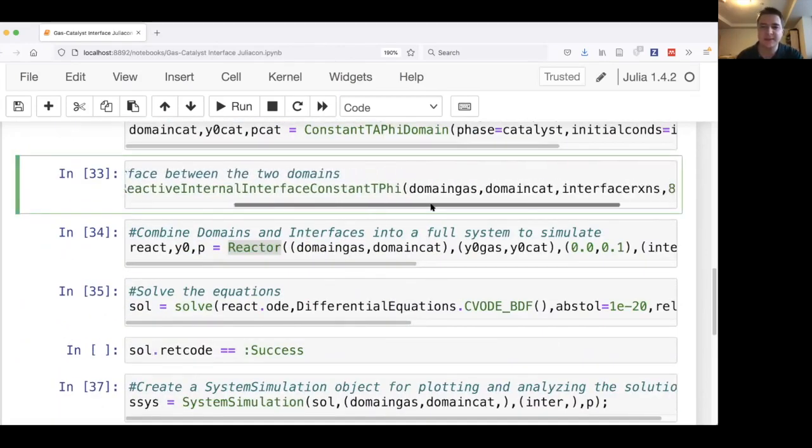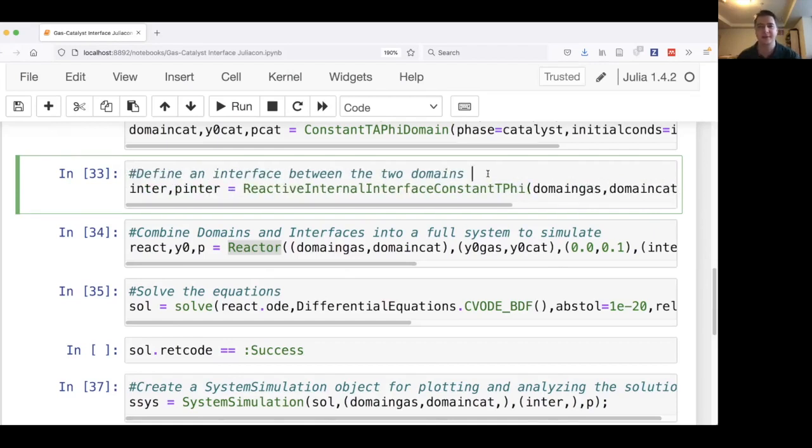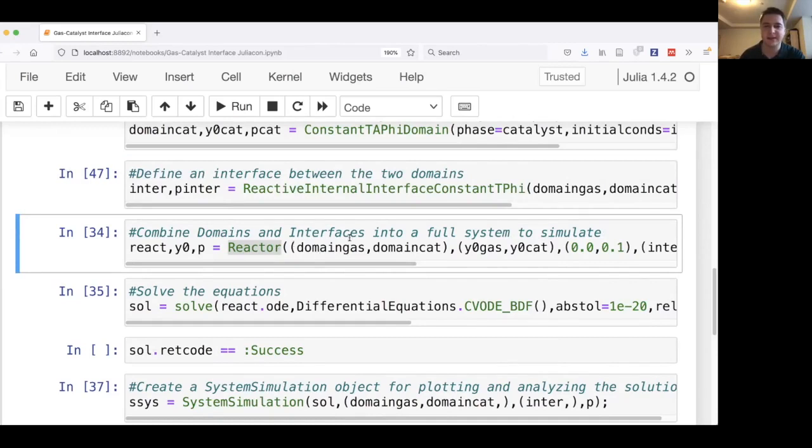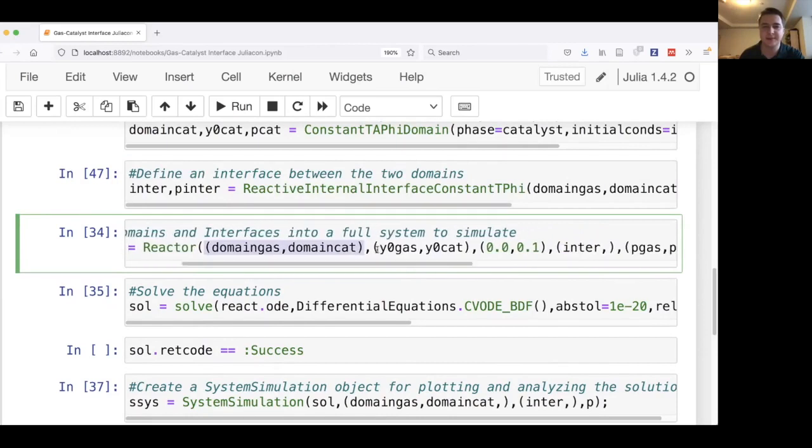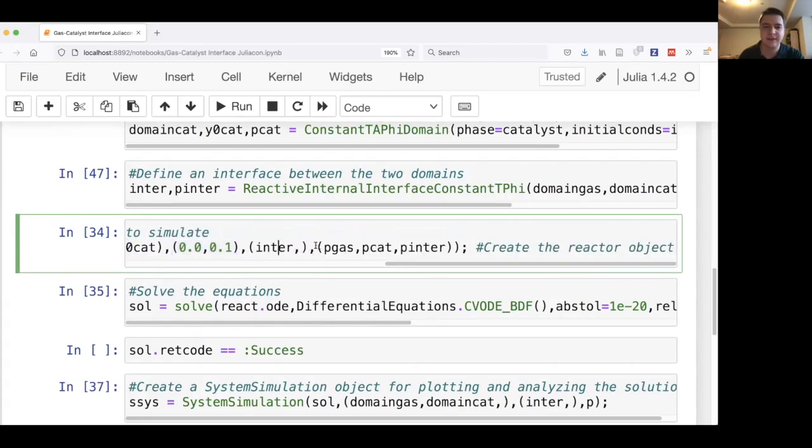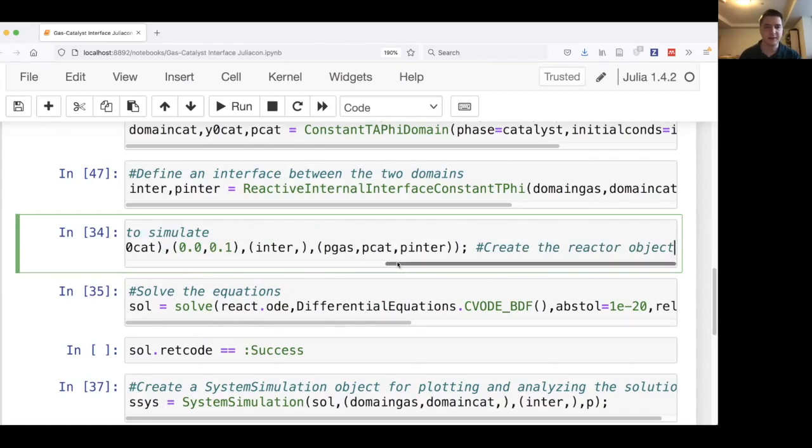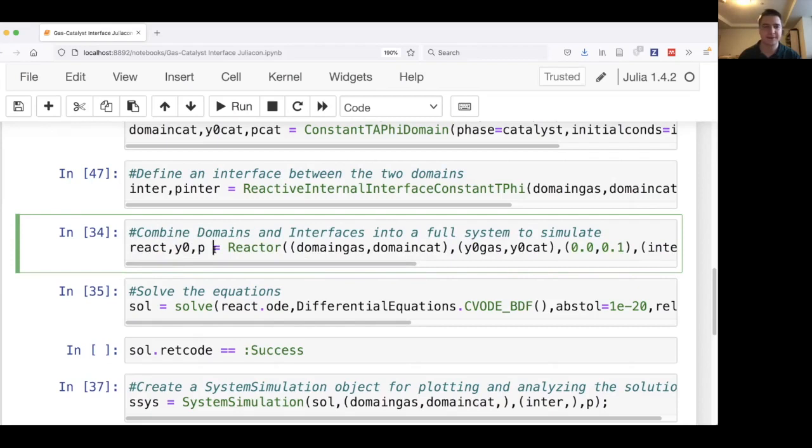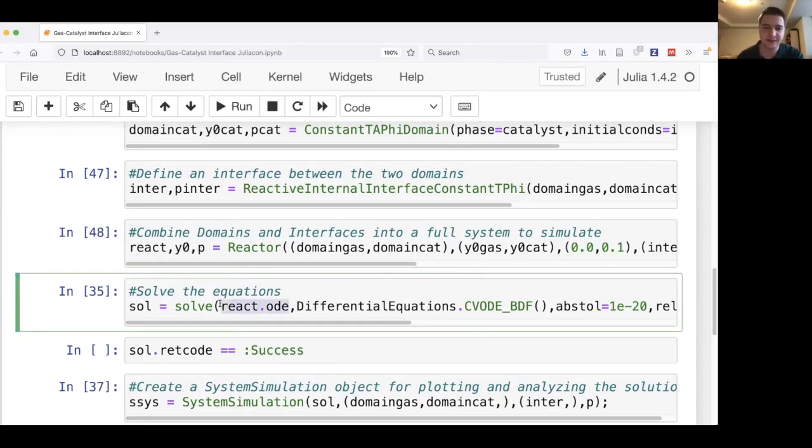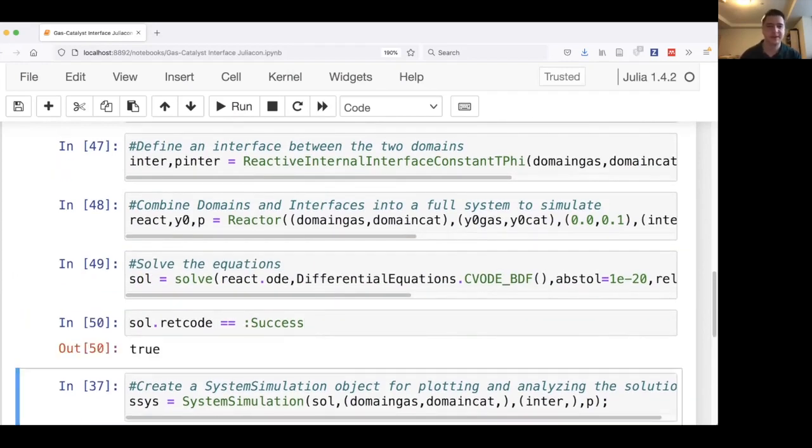Then we define the interface. For this interface, we just give it the domains involved in the interface and the interface reactions. Since we're saying this is a constant temperature potential domain, we give it a temperature and the area of the interface. We then combine these to make the full system in this reactor call, where we give it the domains in order, initial conditions in the same order, the span of the time span, the interface, and then the parameters in order from domains to interfaces. This gives us a reactor object, a full initial condition, and a full set of parameters. This reactor object creates an ODE problem, which allows us to call differentialequations.jl solve function, and essentially solve the ODE. And check that we were successful.